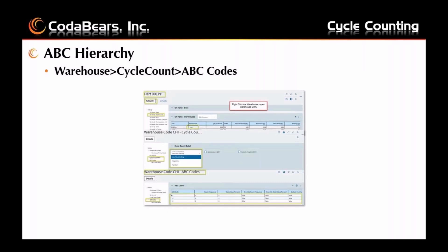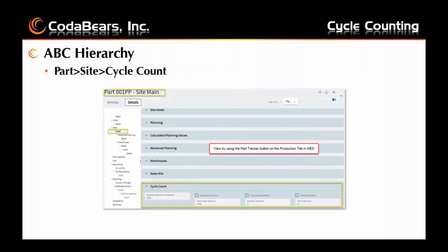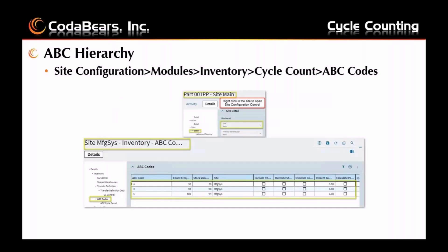In the ABC hierarchy, if codes are set up at the warehouse level, these codes override any other levels except for the part site warehouse cycle count level. You can also use the Part Tracker to get to the site detail and the card for cycle count, where you can see the cycle count information for that level. In the Site Configuration, which you can get to by using the Part Tracker and right-clicking on the site field to open Site Configuration Control, you can navigate to the Inventory ABC Codes and see the count frequency and stock valuation setup specific for that site.